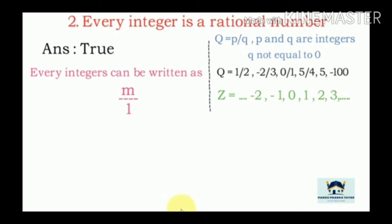Second: Every integer is a rational number. Any integer — whether positive like 1, 2 or negative — can be expressed in the form of P by Q. For example, 2 can be written as 2 by 1. Therefore this statement is true.